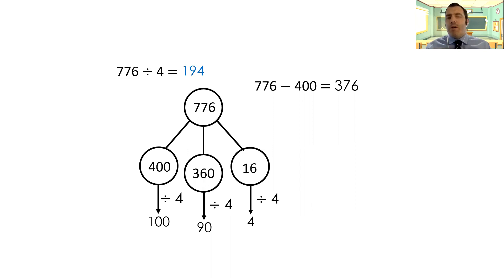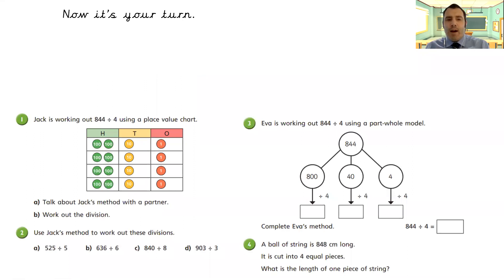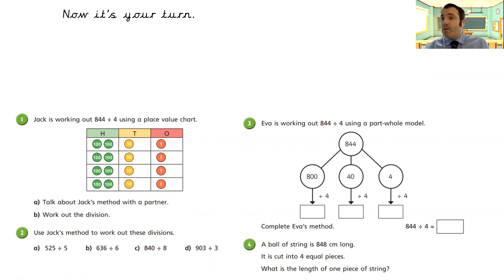Is there another way we could have done this? Have a think. Your turn now — here are some questions for you to have a go at. If you feel like you need a bit of extra support working through these, take the questions with you and go back through the method. For question one, part A: talk about Jack's method with a partner, and see if you can explain it to an adult at home, maybe a sibling — or if you're really stuck, a cuddly toy will do. You want to talk it through so it helps you understand the process. Pause here, and press play when you're ready for your answers.